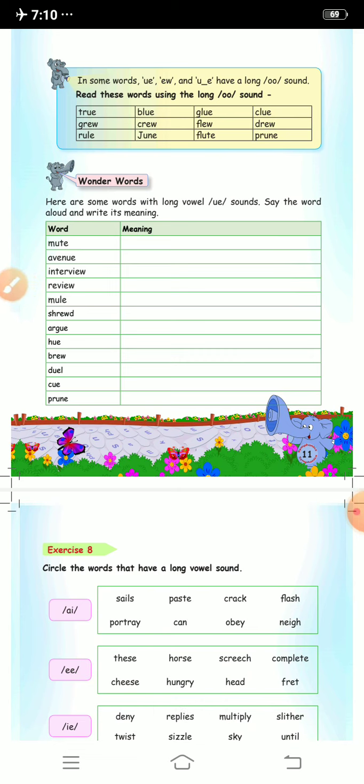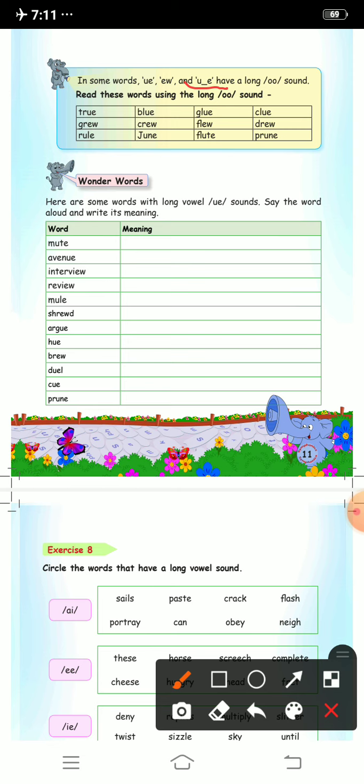Now in some words u e, e w and u dash e have a long o sound also. Like kangaroo, it says u. So it is true, blue, glue, clue, drew, prune, flew, flute, crew, june, grew and rule. Here the spelling is u e but it makes the long ooo sound.